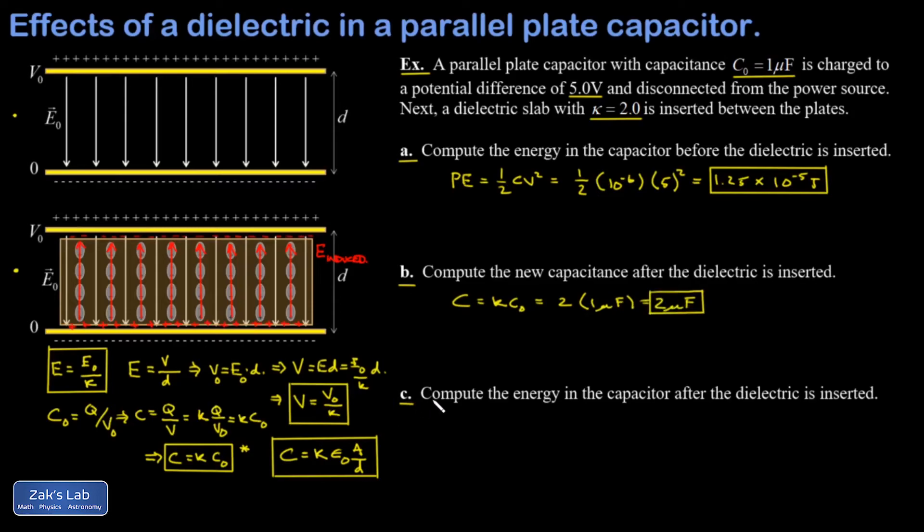In part c I'm asked to find the energy in the capacitor after the dielectric has been inserted. So if I write down the formula one half CV squared, I know that my new capacitance is given by kappa times the original, that's two microfarads. But V has changed. You have to be really careful about that. Provided I'm not connected to the power source anymore, V is going to drop by a factor of kappa.